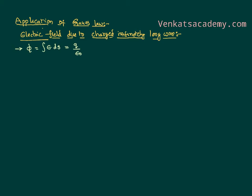Using this Gauss law, we would like to calculate the electric field intensity due to a charged wire. The wire we are considering is positively charged and has infinite length — there is no end to this length, it extends for a very long distance. Since it is all charged positively, at a particular point — say this point at a distance r — we would like to calculate the electric field intensity.